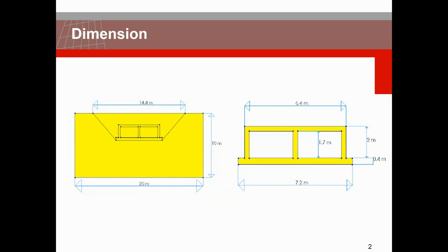Let's talk about the dimension of the model. We will model a culvert with maximum dimensions of 7.2 meters and 2.4 meters, and this culvert will be surrounded by soil with dimensions of 20 by 10, and we will have two openings in this culvert of 1.7 by 2.75 meters.